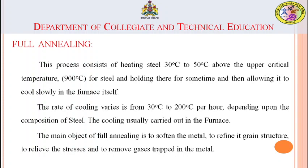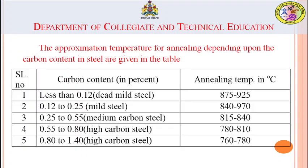We have now studied process annealing and full annealing. A table of approximate annealing temperature ranges is given, based on carbon content. For carbon content less than 0.12%, the annealing temperature is 875 to 925°C. For 0.12 to 0.25% (mild steel), it is 840 to 970°C. For 0.25 to 0.55% (medium carbon steel), the range is 815 to 840°C.